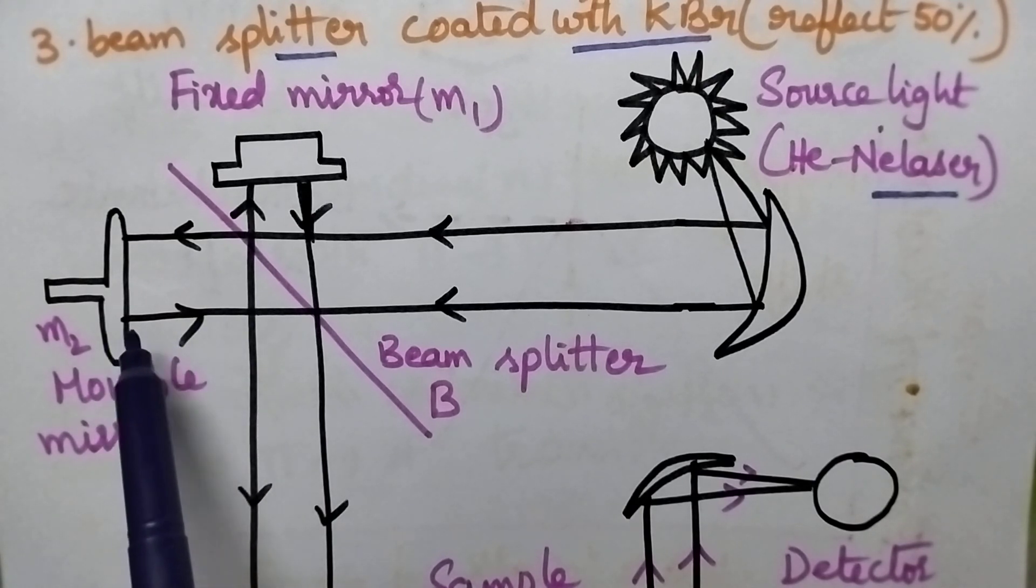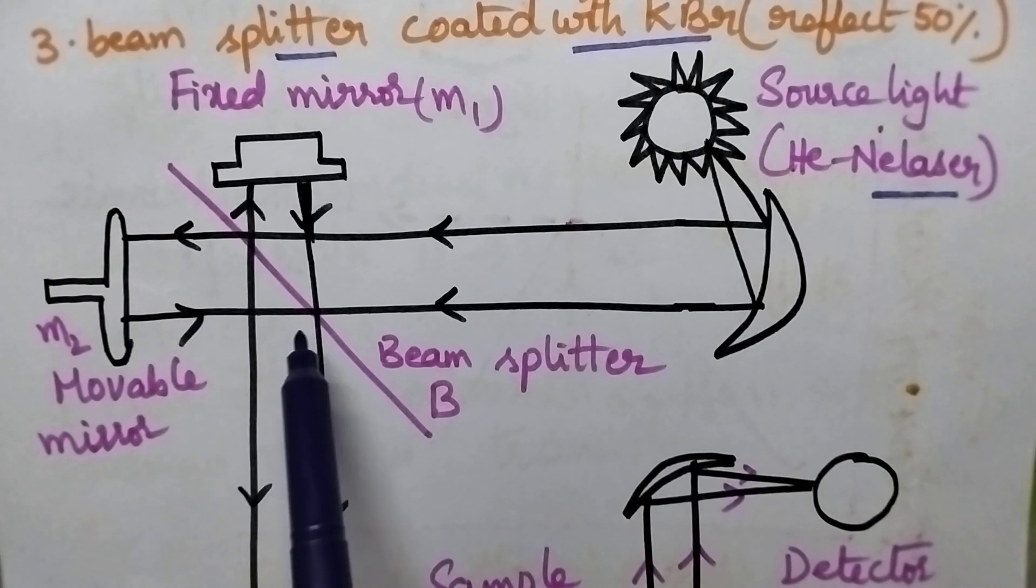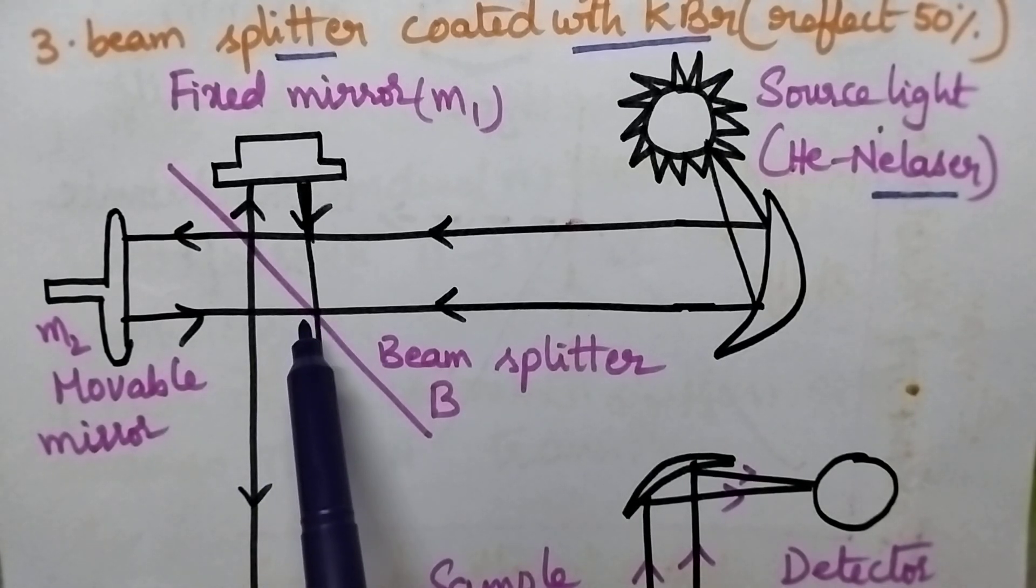Again, the light source will be reflected back to the beam splitter from the movable mirror. At the beam splitter, the radiations coming from the fixed mirror and movable mirror will recombine.